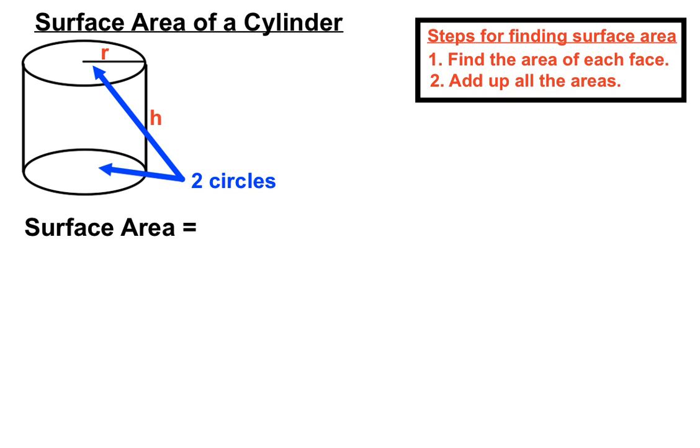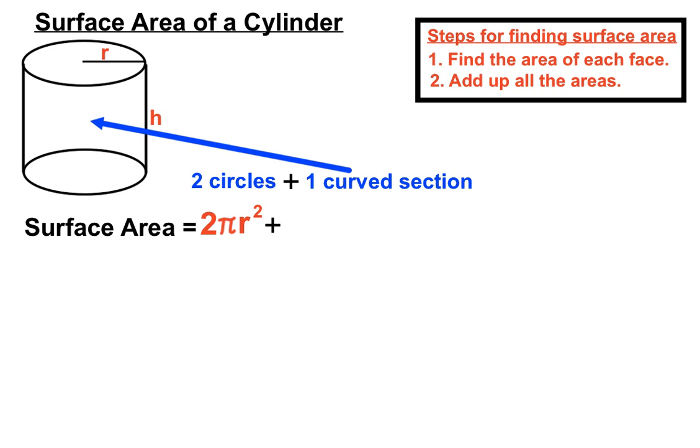Now we've got two circles there, so so far we have surface area—we'll need to count those two circles. Each of those circles has an area formula of πr², so we'll have 2πr², so that accounts for the two circles. Now this top edge is actually equivalent to the distance around the circle. Now you know that the distance around the circle is called a circumference, so our circumference formula is 2 times π times the radius, 2πr.